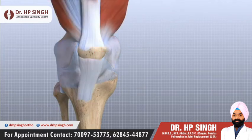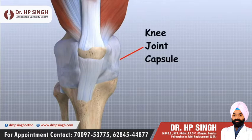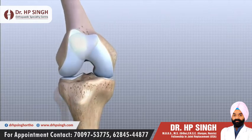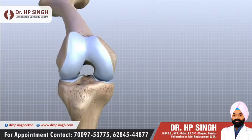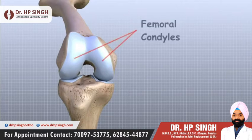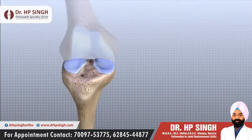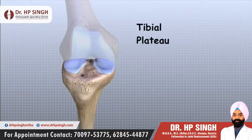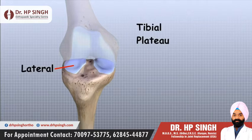The knee joint is a synovial joint. Synovial joints are enclosed by a ligament capsule and contain a fluid, called synovial fluid, that lubricates the joint. The end of the femur joins the top of the tibia to create the knee joint. Two round knobs called femoral condyles are found on the end of the femur. These condyles rest on the top surface of the tibia, called the tibial plateau. The outside half, farthest away from the other knee, is called the lateral tibial plateau, and the inside half, closest to the other knee, is called the medial tibial plateau.